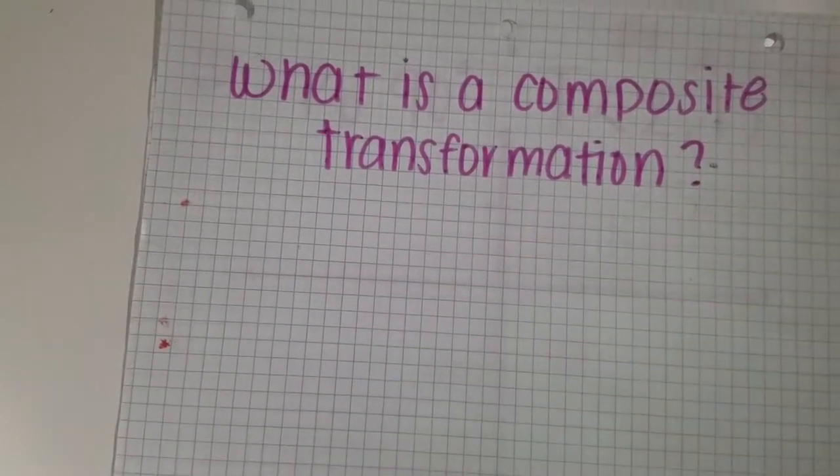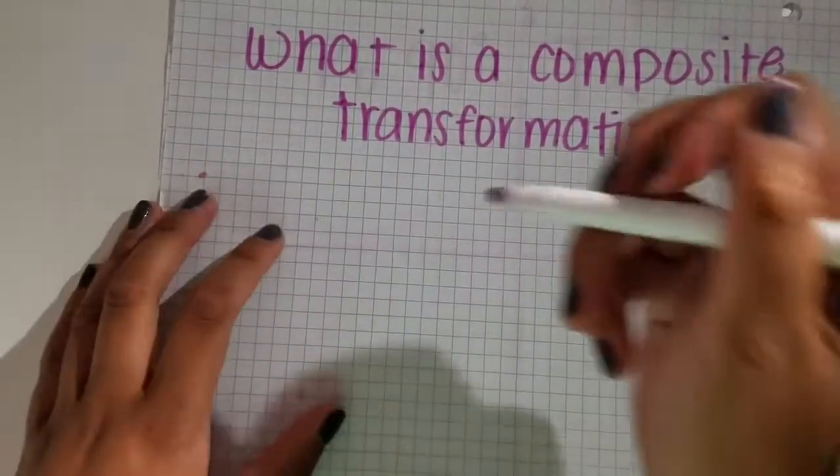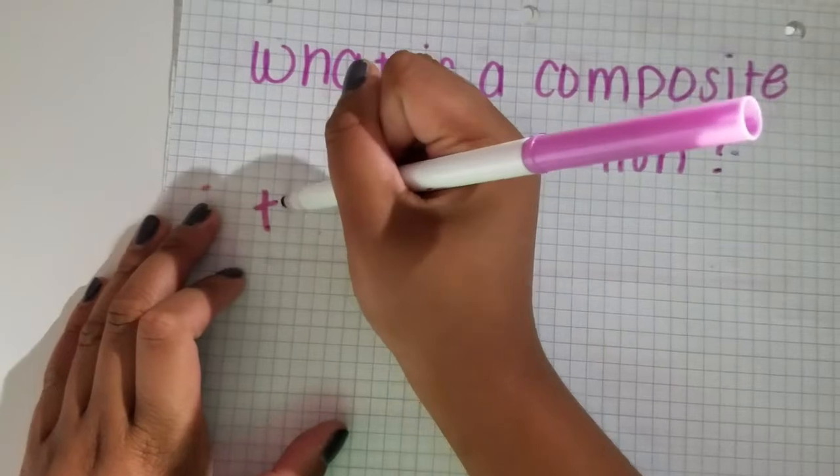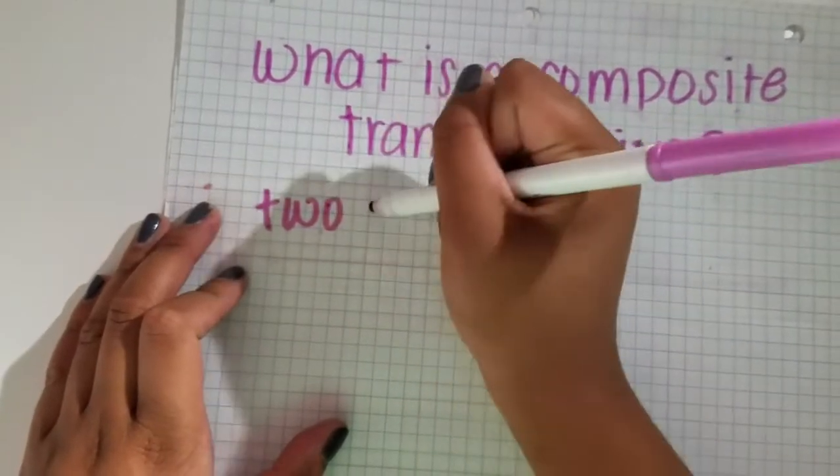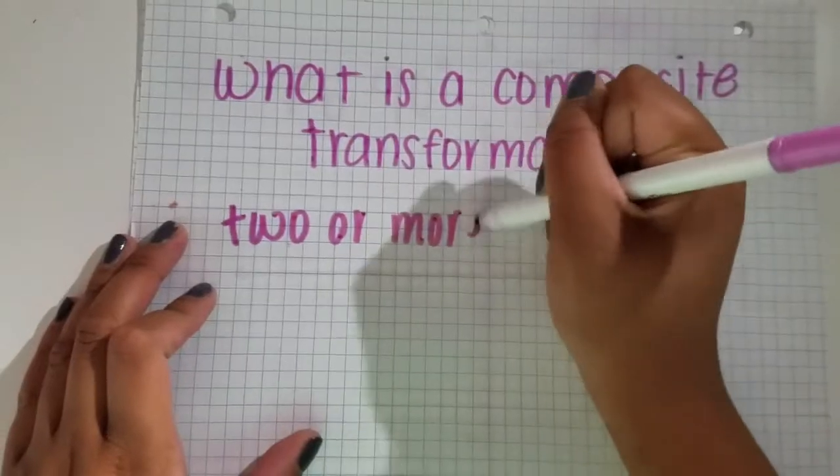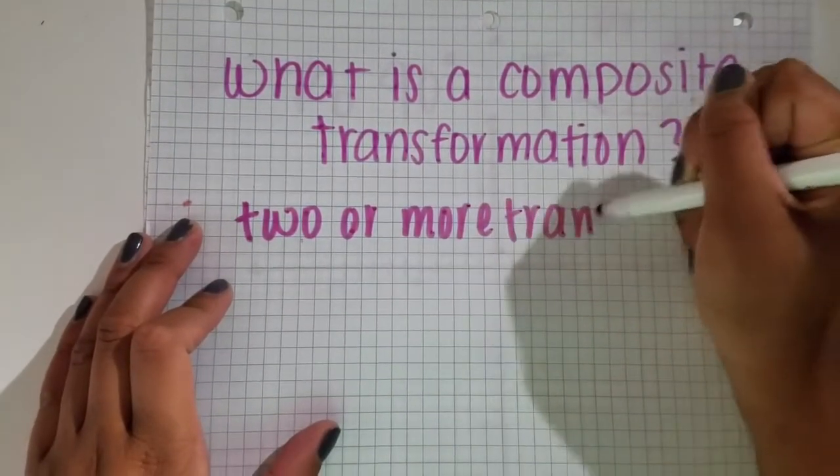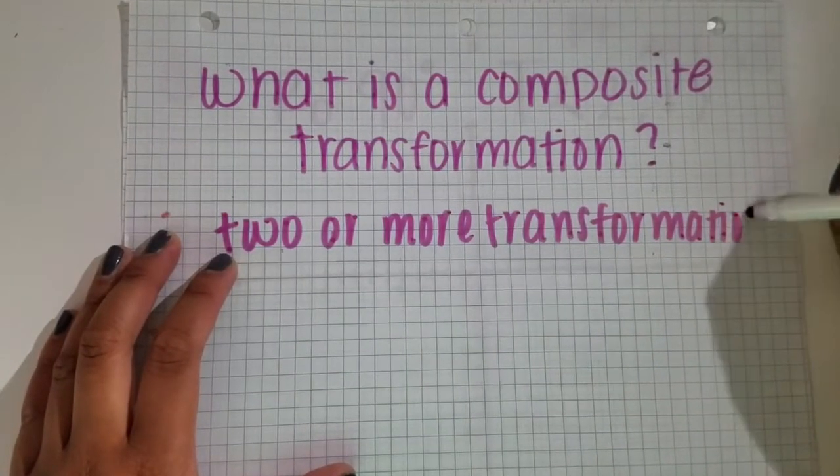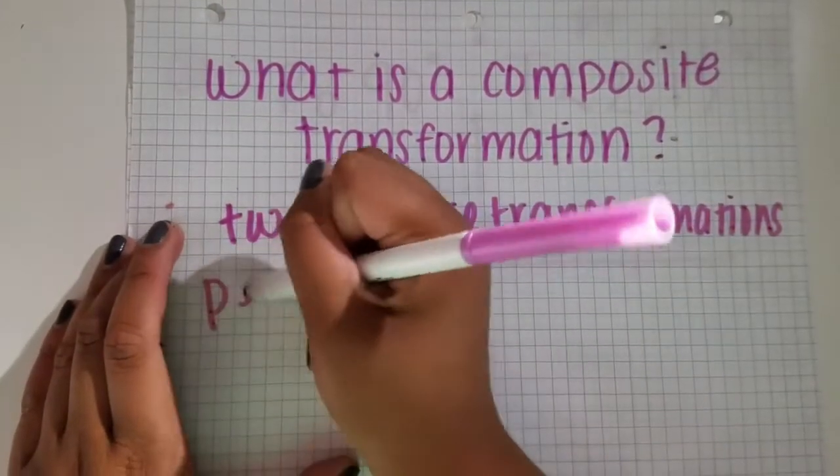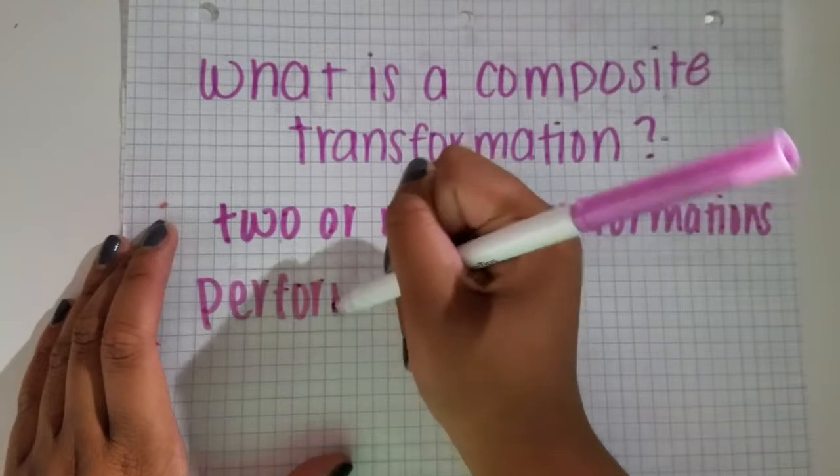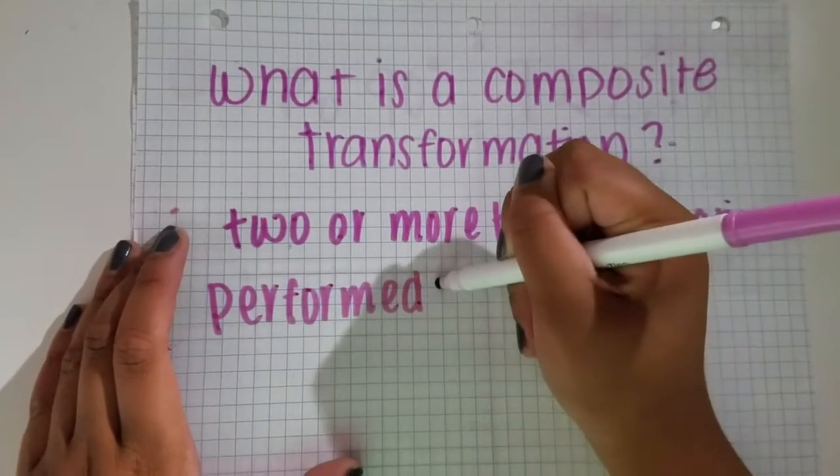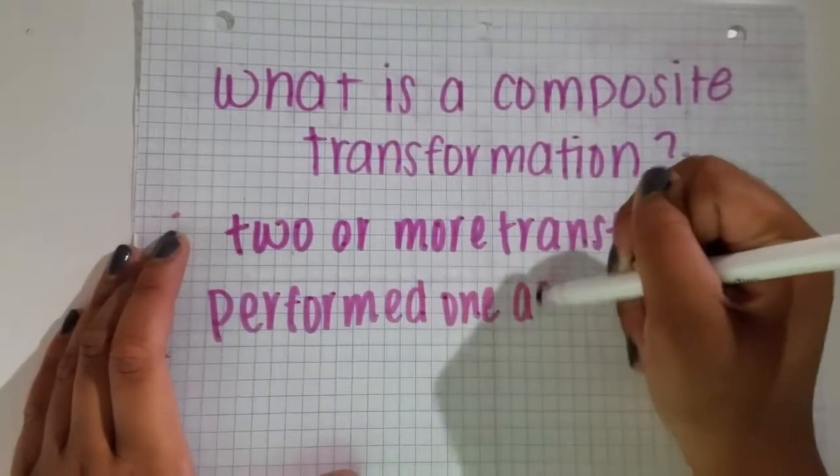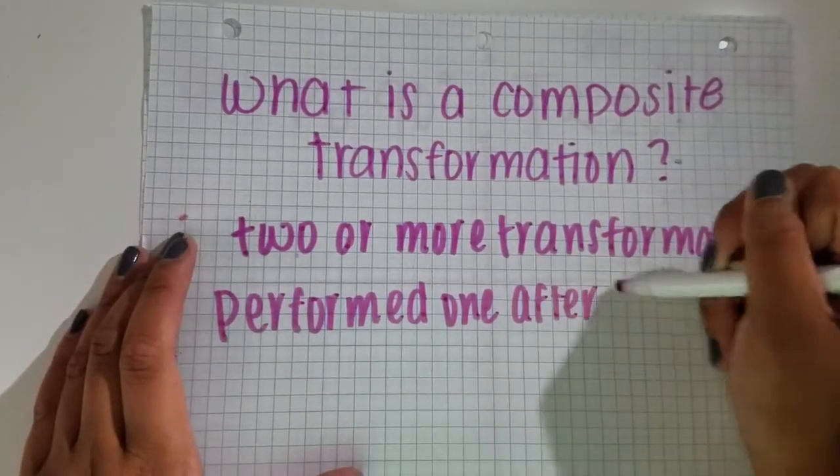What is a composite transformation? Composite transformations are two or more transformations performed one after the other.